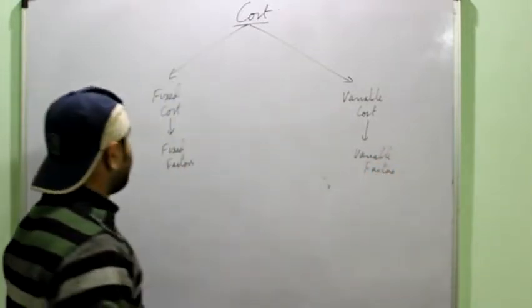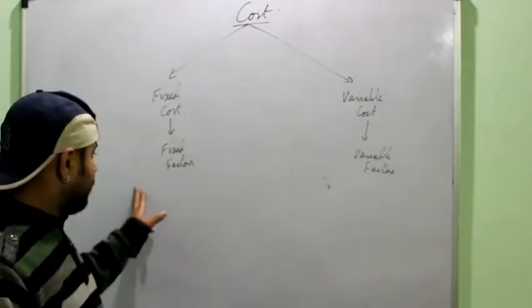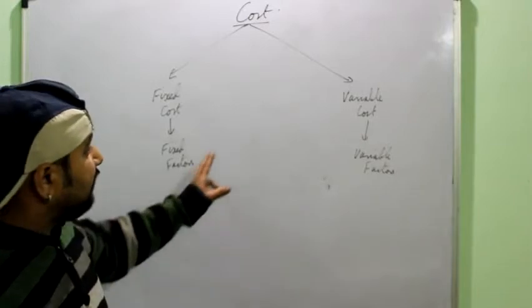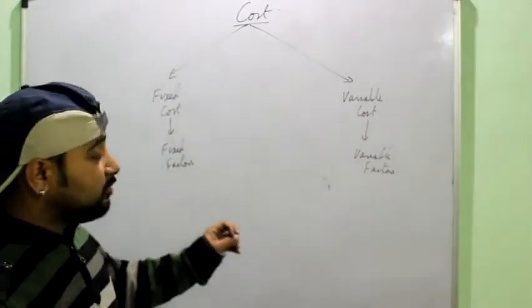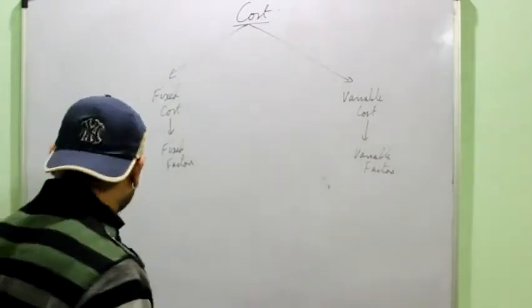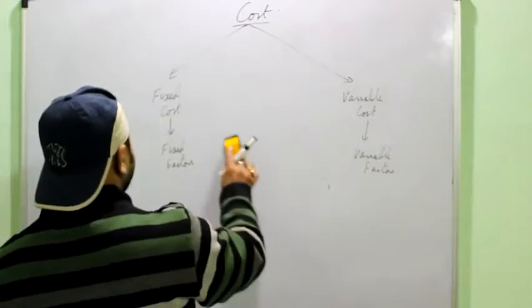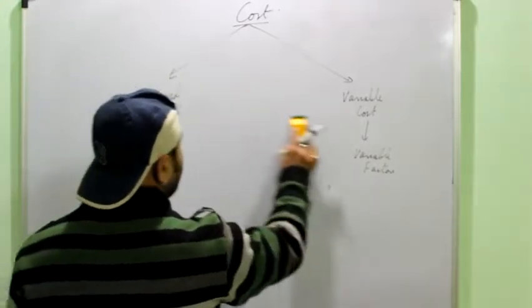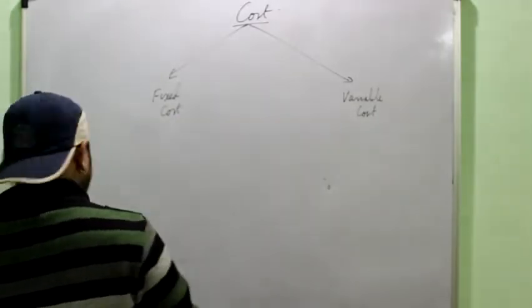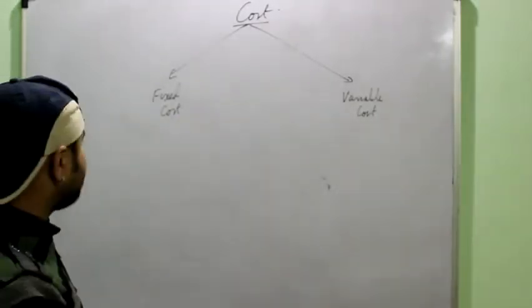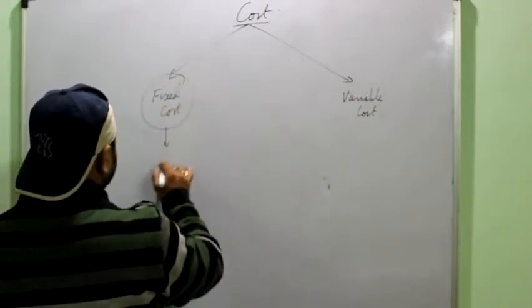If you are asked what is fixed cost, you will say it is the cost which is incurred on the fixed factors of production which are used in the production process while the variable cost is the cost incurred on the variable factors used in the production process. Now, when we talk about the characteristic of these costs, again you have to remember that we are studying the short run where fixed factors remain constant. So, it remains constant in the short run.